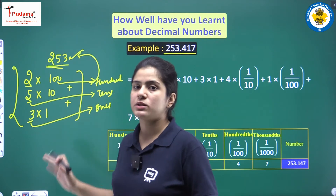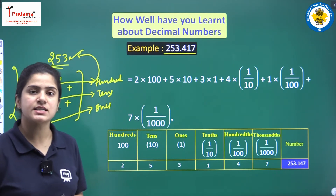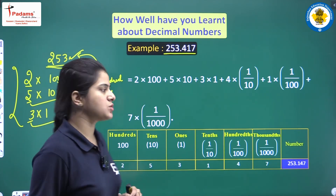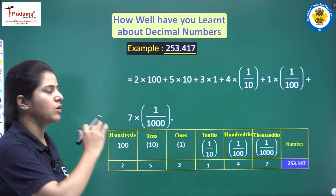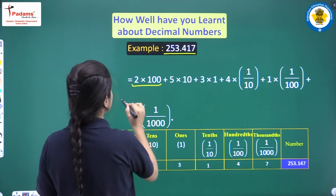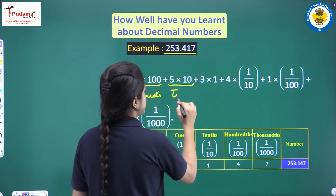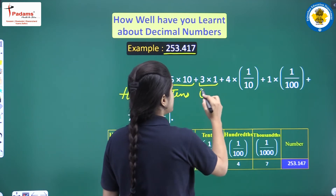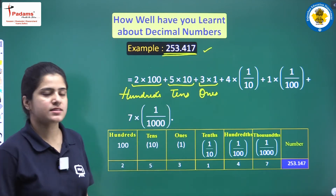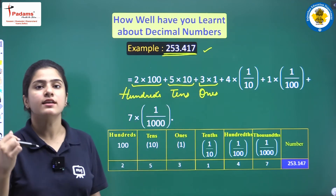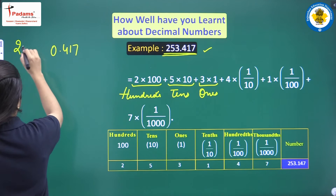This was all about the basic nature of 253. Now we'll have the expansion of the complete decimal number, that is 253.417. The part 253 is the same: 2 into 100, 5 into 10, and 3 into 1 — all added together to form the cumulative number. Next, we'll be starting with the numbers after the decimal point, that is 0.417. We can also write it as 253 plus 0.4 plus 0.01 plus 0.007.